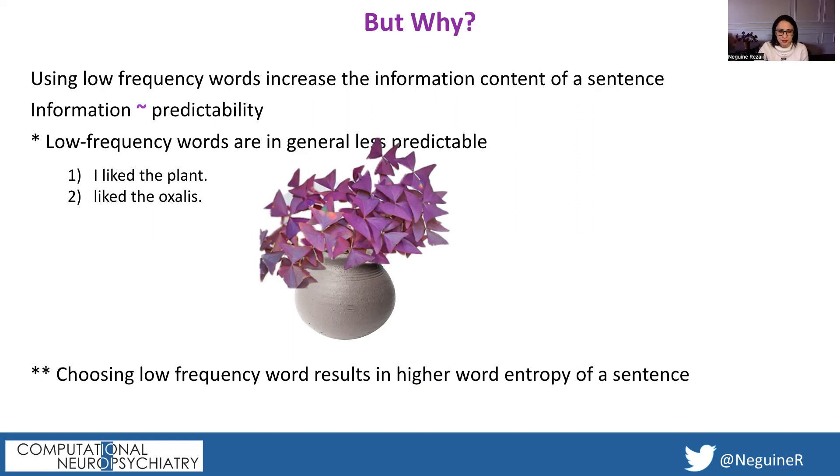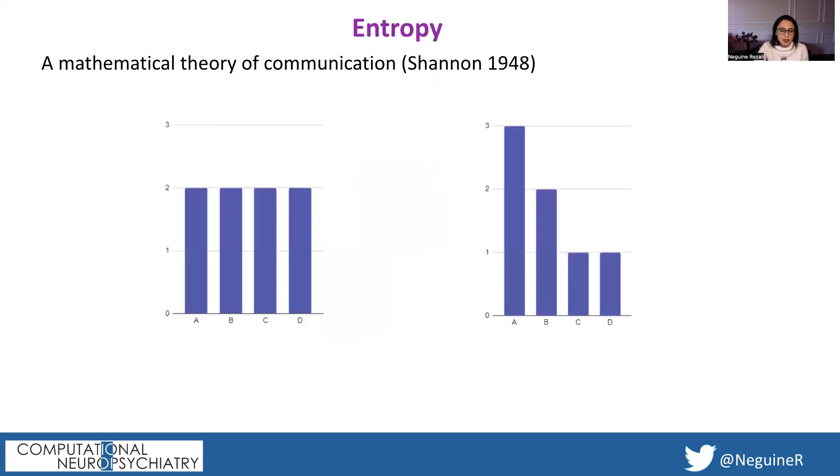There is a second way in which low frequency words increase sentence information, and that's through entropy. Entropy is a formal way of measuring information. A set of events with a uniform distribution is less predictable with a higher entropy and more information, when you compare it with a skewed distribution which has lower entropy and less information.